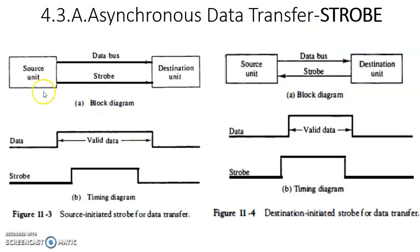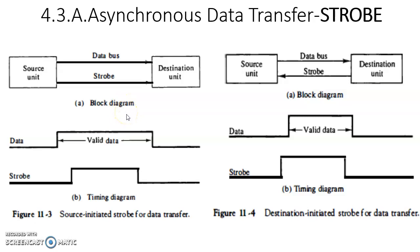Originally the clock signal is used, but since the source unit and destination unit are not sharing the same clock, this strobe control signal is used for that purpose. Strobe-controlled data transfer can be classified into two ways: source-initiated or destination-initiated. That means this data transfer can be initiated either by the source or the destination.